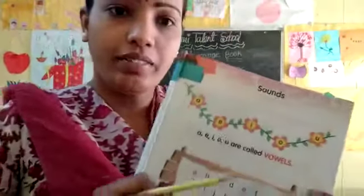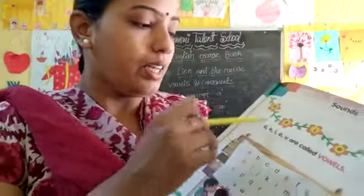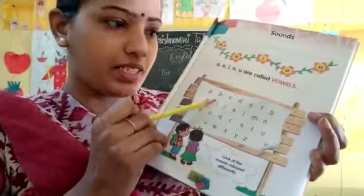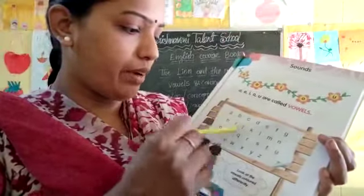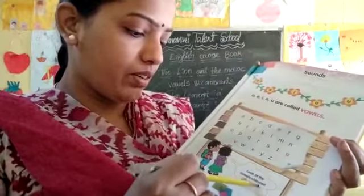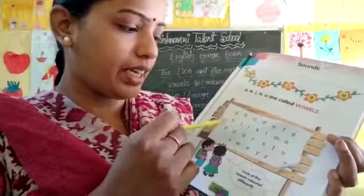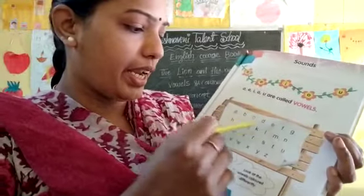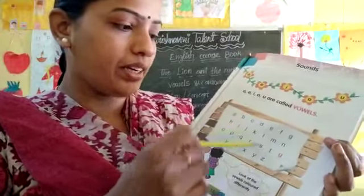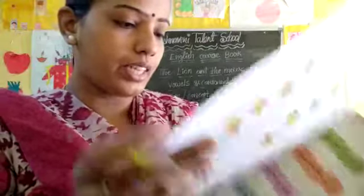Already we learnt the vowels, consonants, and blend words. A, E, I, O, U are called vowels. Look at the vowels colored differently — vowels are colored in red. A, E, I, O, U are called vowels, and the remaining letters are called consonants.